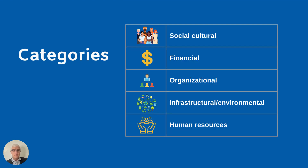When you look at categories of vulnerability, there are five of them: social and cultural, financial, organizational, infrastructural and environmental, and human resources.